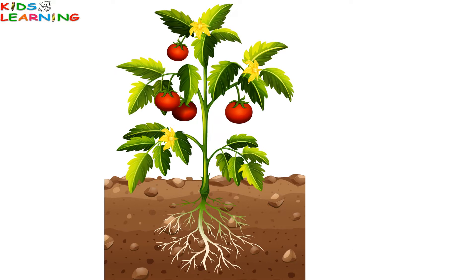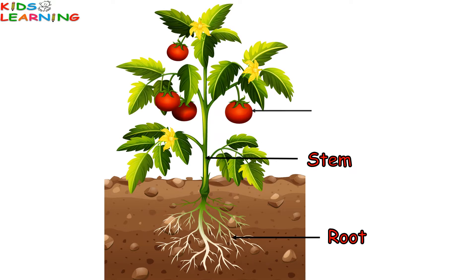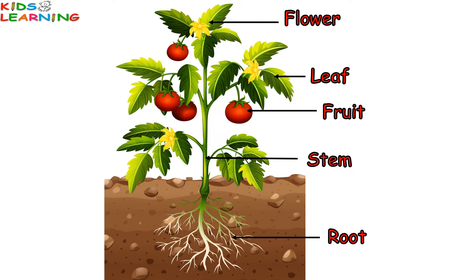A plant has five basic parts. They are: Root, Stem, Fruit, Leaf, and Flower. Let's see each one of them in detail.